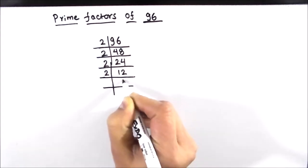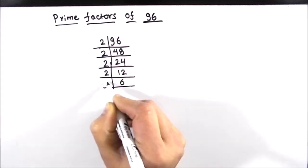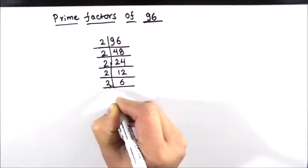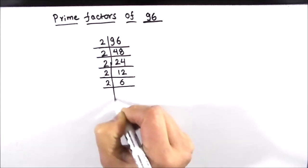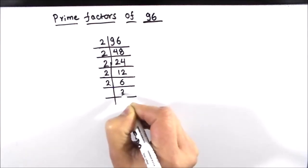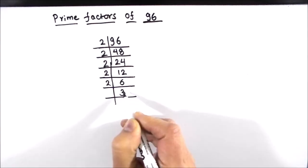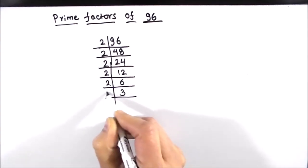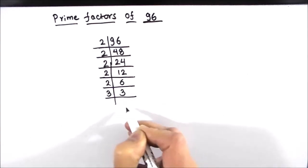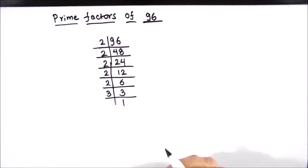2 times 6 is 12, and 6 is also divisible by 2. 2 times 3 is 6, and 3 is a prime number — it is only divisible by 3. 3 times 1 is 3.